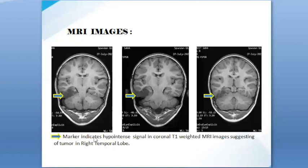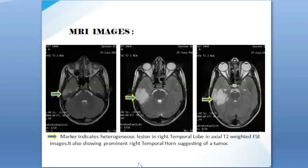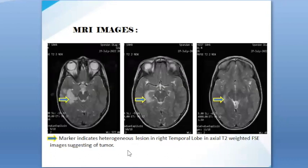MRI images: The arrow marks indicate a hypointense signal in T1-weighted MRI images, suggesting a tumor in the right temporal lobe. The T1-weighted FLAIR images also indicate a hypointense signal in the temporal lobe. The T2-weighted FSE images show a heterogeneous lesion with prominent right temporal horn.